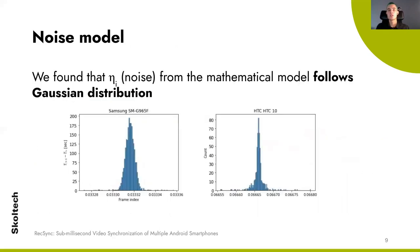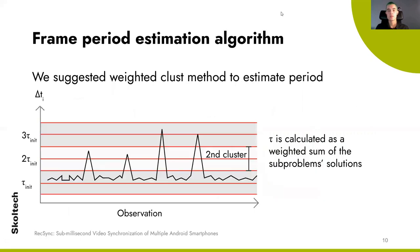Looking at the data, we observed that the noise does in fact follow the Gaussian distribution, which justifies our choice for the approximated problem. Based on these findings, the timestamps period can be calculated as a weighted sum of the solutions for each cluster, concentrated around some multiple of the initial period estimation.